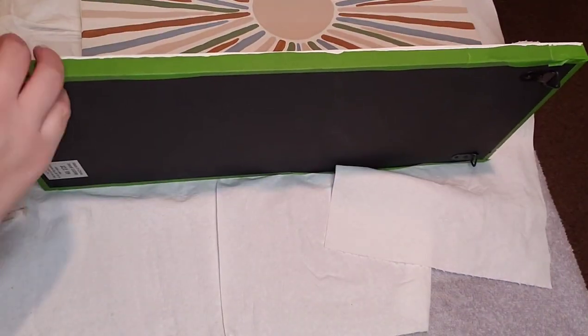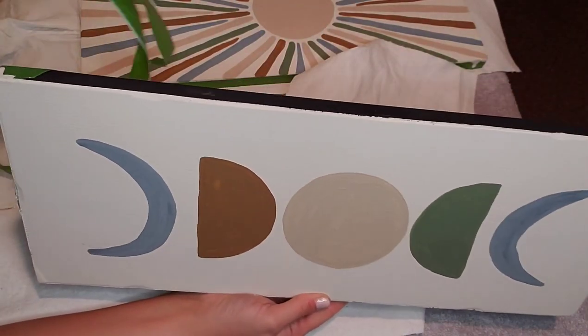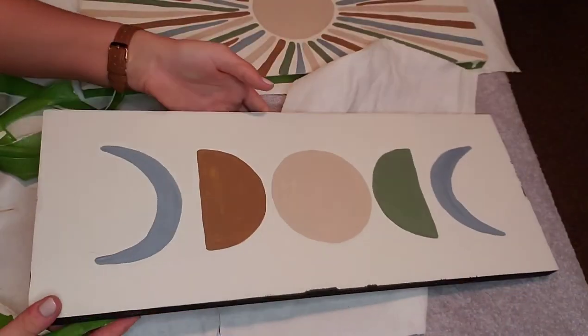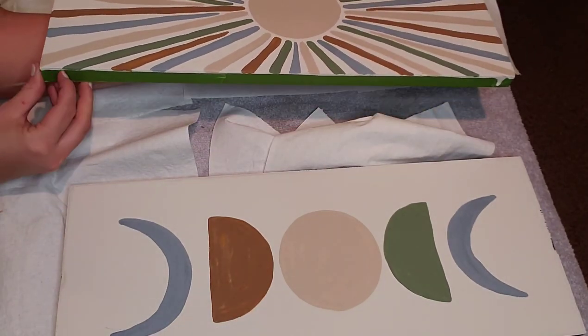Now I'm going around and pulling off all of that tape that we had around the edges, and then I'm also going to go in with that 220 grit sandpaper and give the edges just a little bit of distressing to add some character.